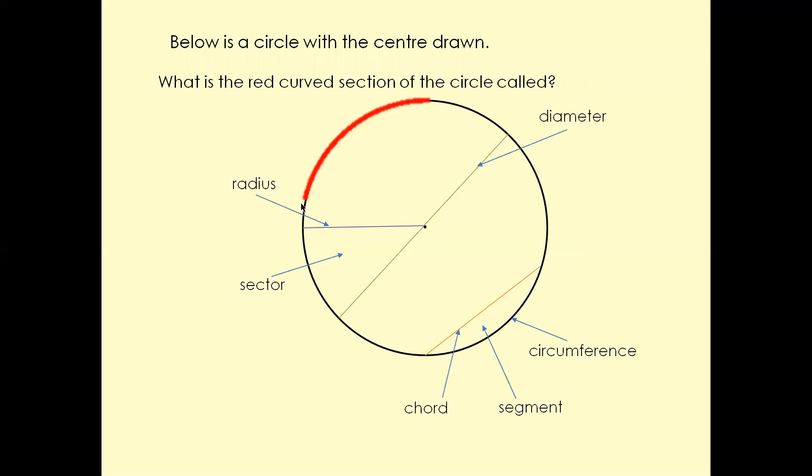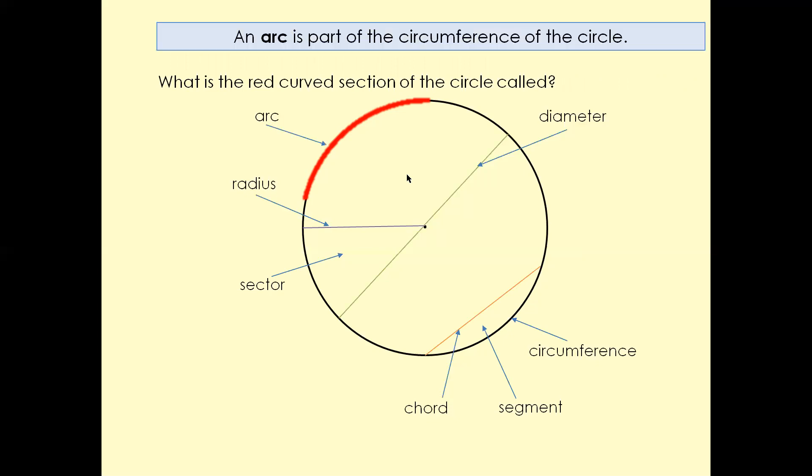What is the red curved section of the circle called? That is called an arc. An arc is a part of the circumference of the circle, a section of the circumference.